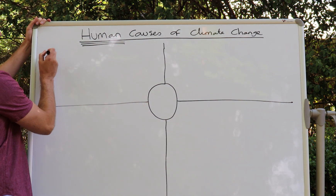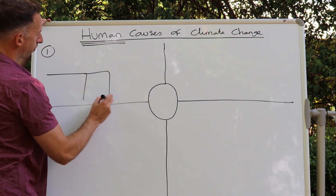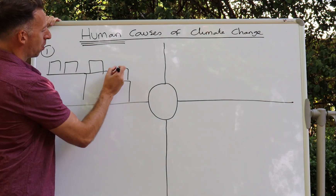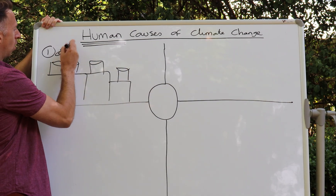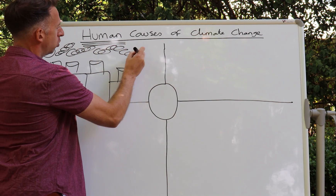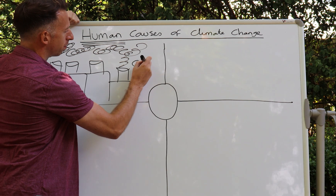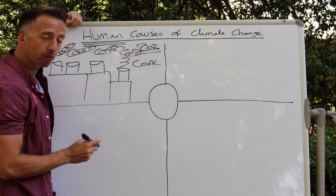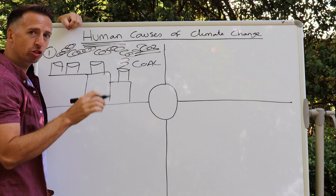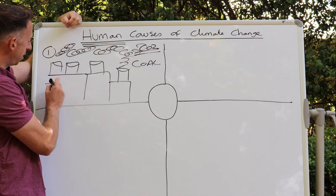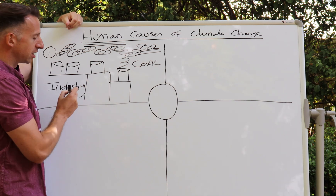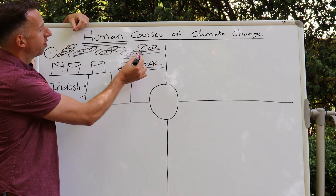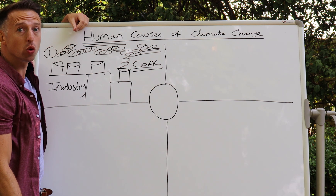Cause number one: around the world we've got an increase in industry — industrial action — where large amounts of fossil fuels, such as coal, are burnt, which produces large amounts of CO2, carbon dioxide, into the atmosphere.